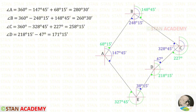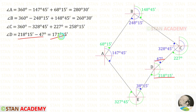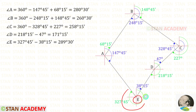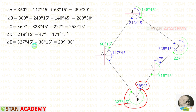Now let us find the exterior angle at station D. Here we can easily find the exterior angle by subtracting one angle from the other. For station E, we can also easily find the exterior angle by subtracting the relevant angles. When we do that, we get the exterior angle at E.